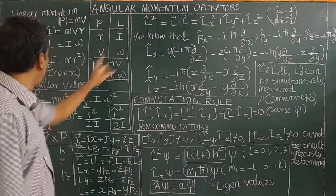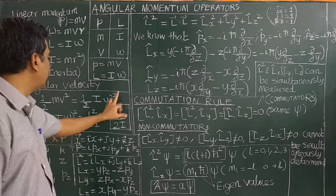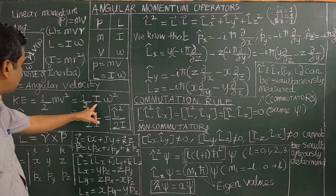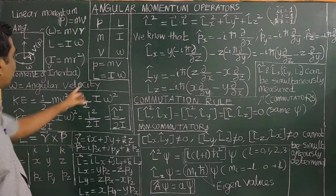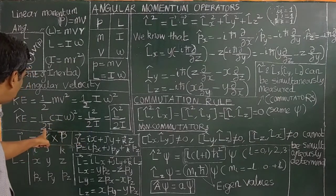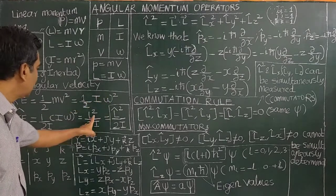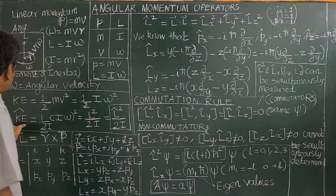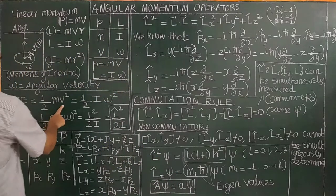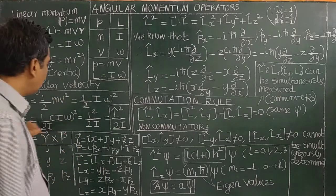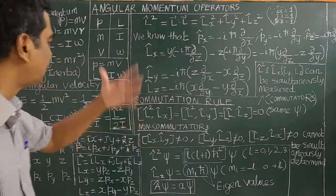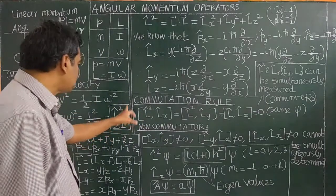We can express kinetic energy in terms of angular momentum by multiplying numerator and denominator by I. Then we get i-squared omega-squared, and i-squared omega-squared equals L squared — angular momentum squared. So kinetic energy is expressed in terms of angular momentum as L squared over 2I. Correspondingly, for linear momentum, kinetic energy equals P squared divided by 2m.